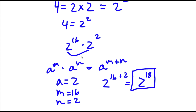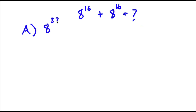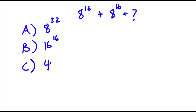So now it's time for our bonus problem: how to solve 8 to the power of 16 plus 8 to the power of 16. For this problem we have four answer choices. A is 8 to the power of 32. B is 16 to the power of 16. C is 4 to the power of 64. And D is 2 to the power of 49.